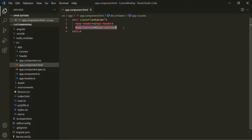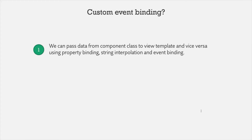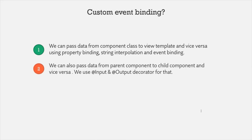Now, why is it important to understand what is a child component and what is a parent component? That's because we can pass data from a component class to a view template and vice versa using property binding, string interpolation, and event binding. It is also possible to pass data from the parent component to child component and vice versa. For that, we use the @Input decorator to pass data from parent to child, and the @Output decorator to pass data from child to parent.